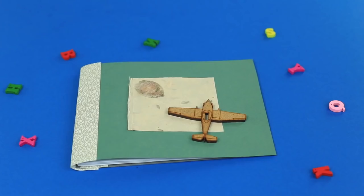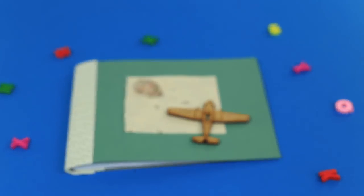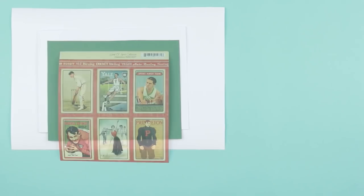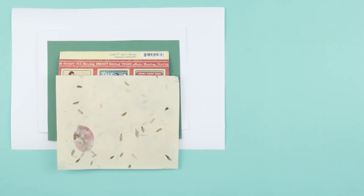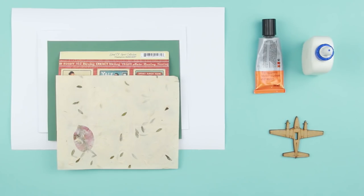In our tutorial, we'll show you how you can make a scrapbook for your boyfriend. We'll need white paper, colored cardstock, paper with prints, patterned paper, multi-purpose glue, white glue, and decorative supplies.